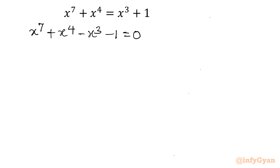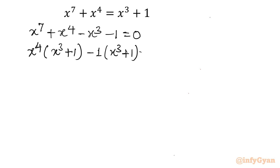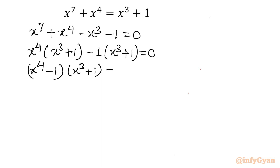Now we can see x⁴ is common from the first two terms. So I will take x⁴ common — that gives x³ + 1. And from the last two terms I can take -1 common, leaving x³ + 1. So the major task of factorization is nearly done: (x⁴ - 1)(x³ + 1) = 0.